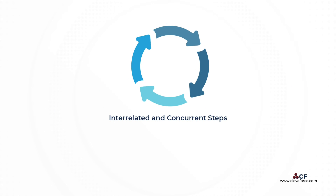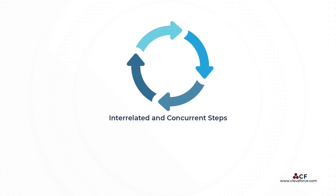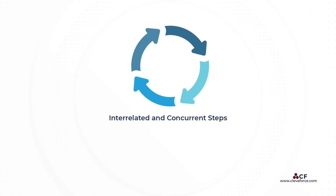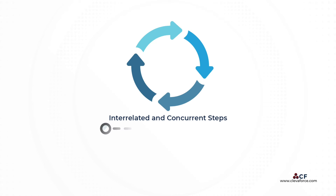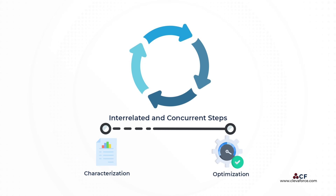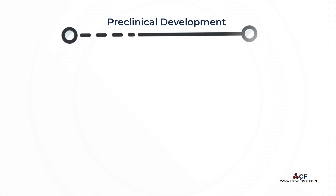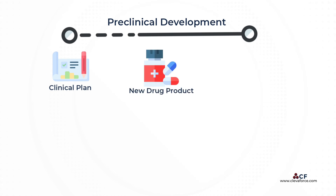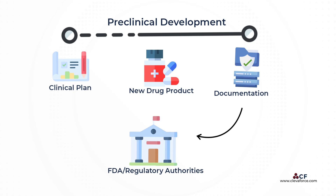These efforts are rarely discrete and sequential. Rather, they are interrelated and often concurrent, with results from each activity informing the other steps as the drug candidate progresses through characterization and optimization. Concurrent preclinical development activities include developing the clinical plan and preparing the new drug product, including the associated documentation to meet stringent FDA Good Manufacturing Practices regulatory guidelines.